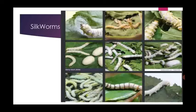Next, let's learn about animal fabrics. Silk, wool, and leather are obtained from animals. The first one is silk. Silk is obtained from the silkworm cocoon. The silk thread is made into fabric. It is smooth and shiny, and also very delicate.